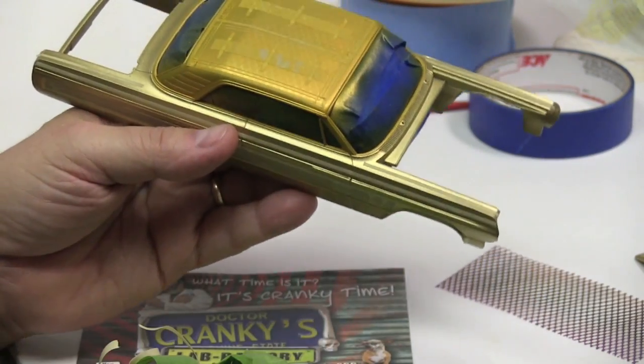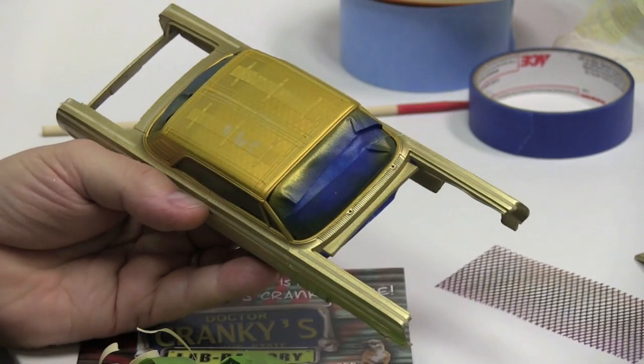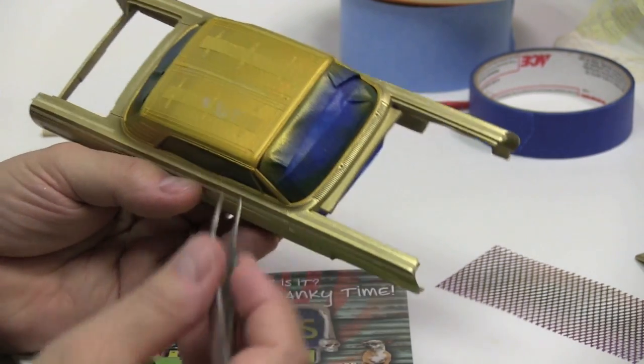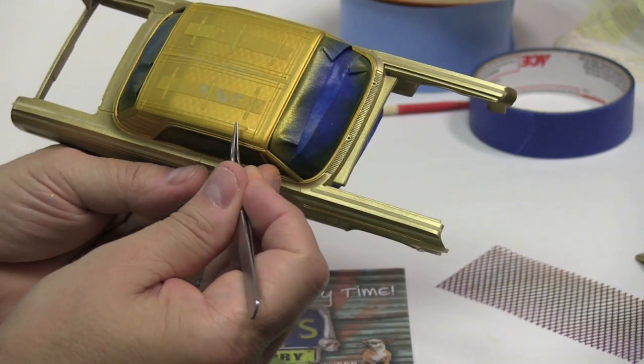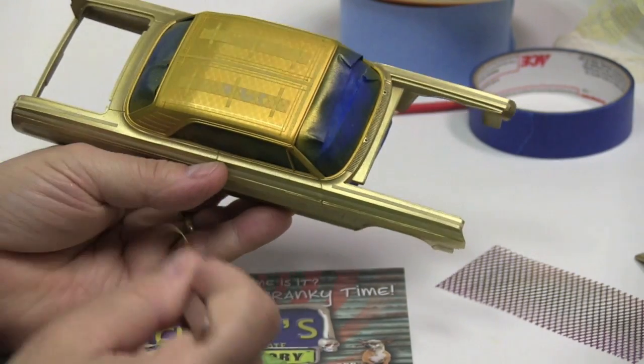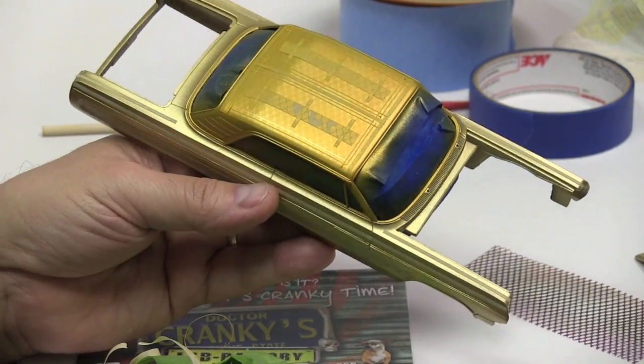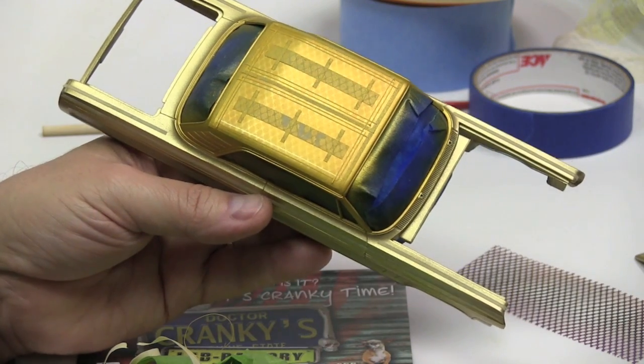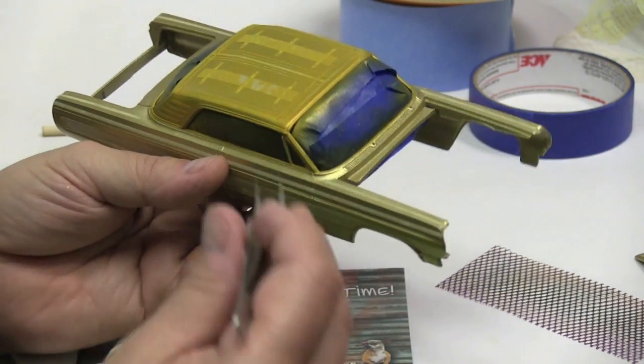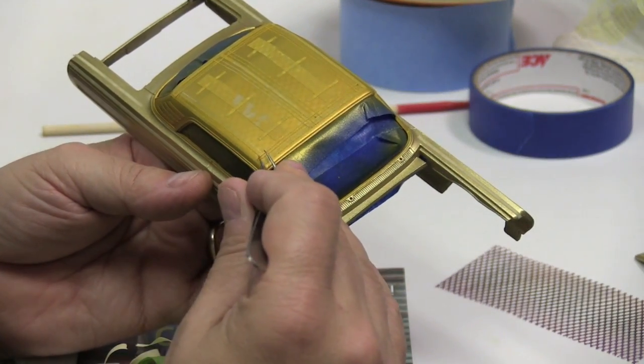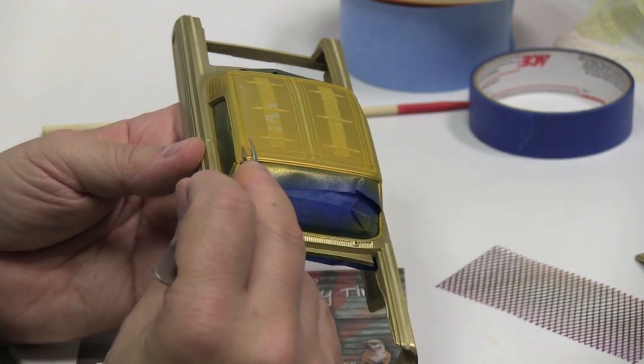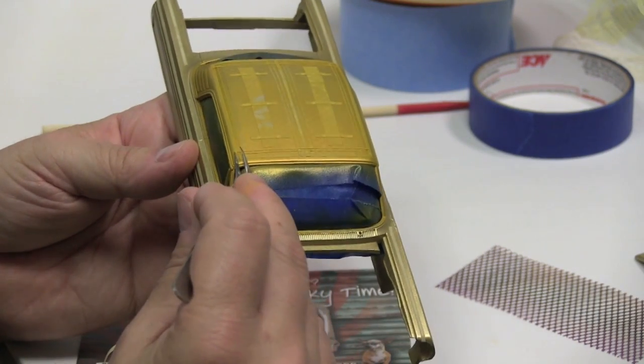Now, this is where your tweezers will start coming in. And you have to be very, very careful. You start removing some of that tape. And I hope you can see it. See that shimmering light? That's the gold underneath. So just a little bit at a time, make sure you do not scratch your paint.